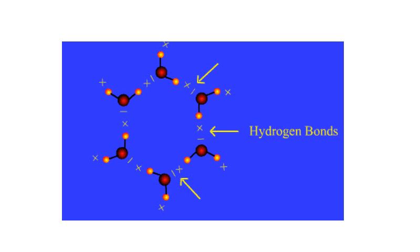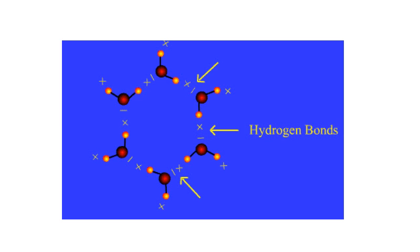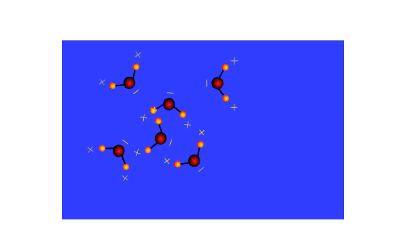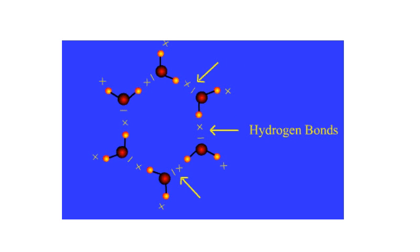Keep in mind that because hydrogen bonds are weak, they are constantly breaking and reforming, and this is what allows water to flow.